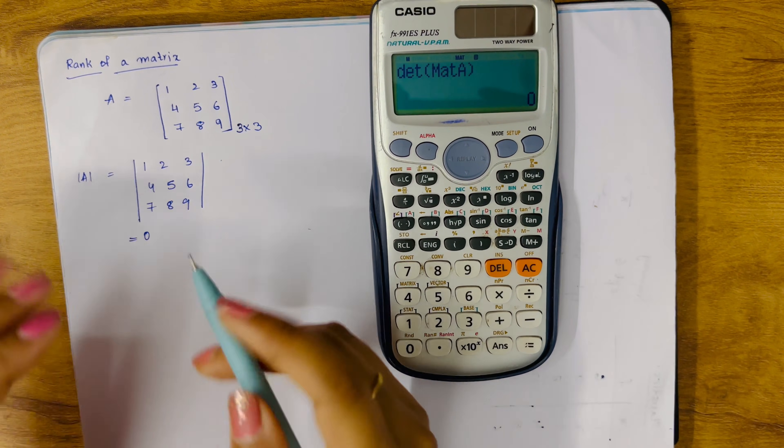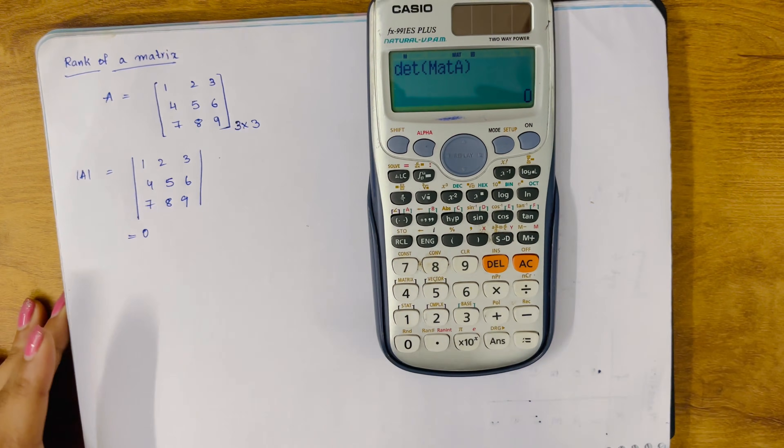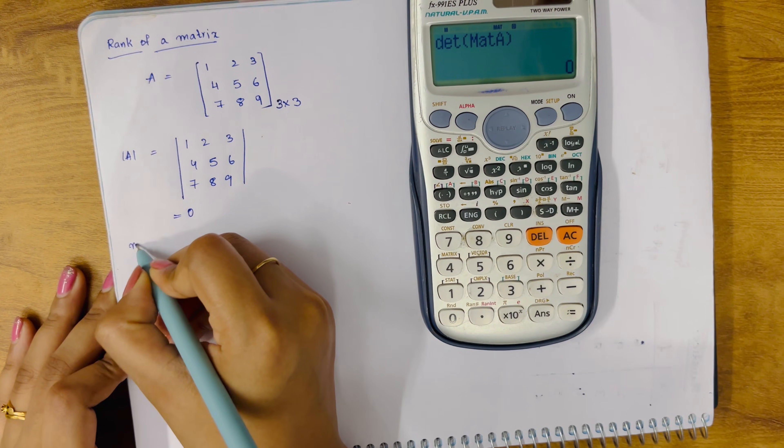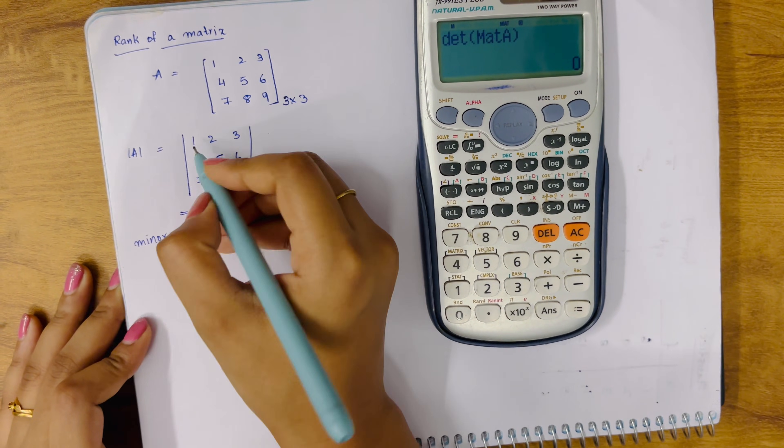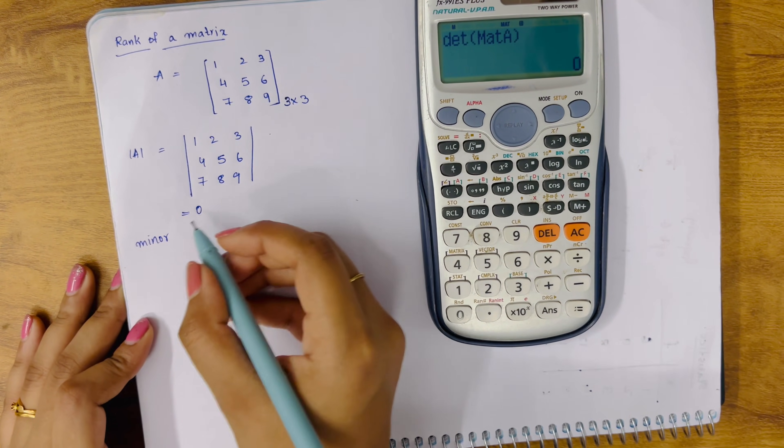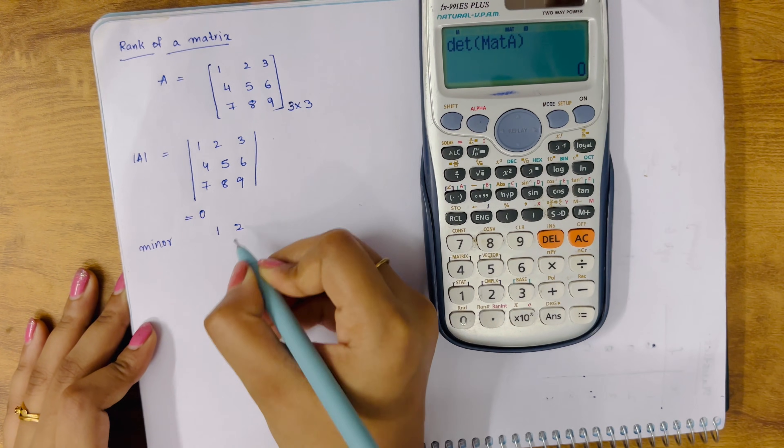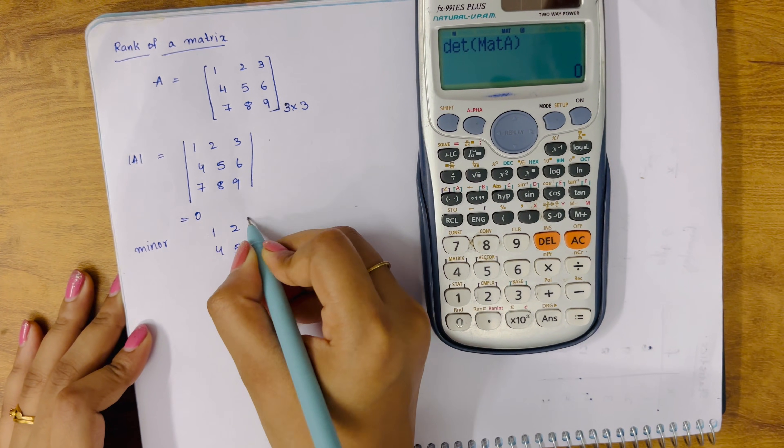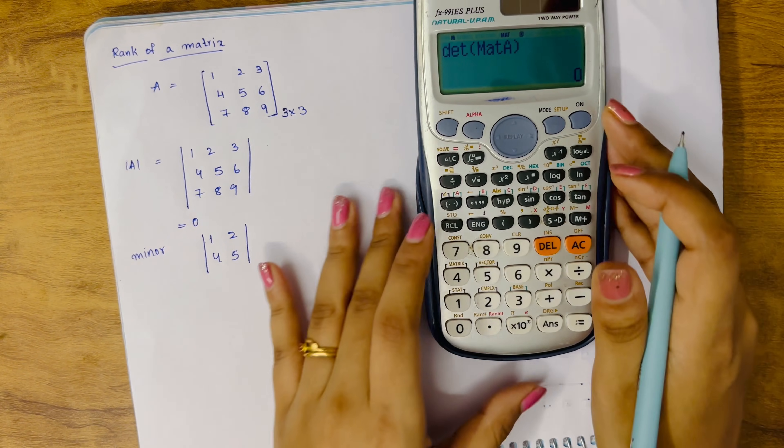Now we go to the minor. The minor we are picking up is this: 1, 2, 4, 5. So this is the minor. Now we have to find the det of this.